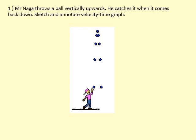Mr. Naga throws the ball vertically upwards. He catches it when it comes back down. Sketch and annotate a velocity-time graph.